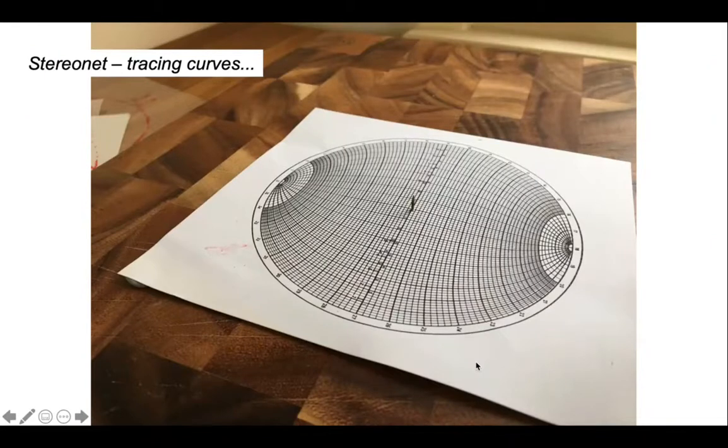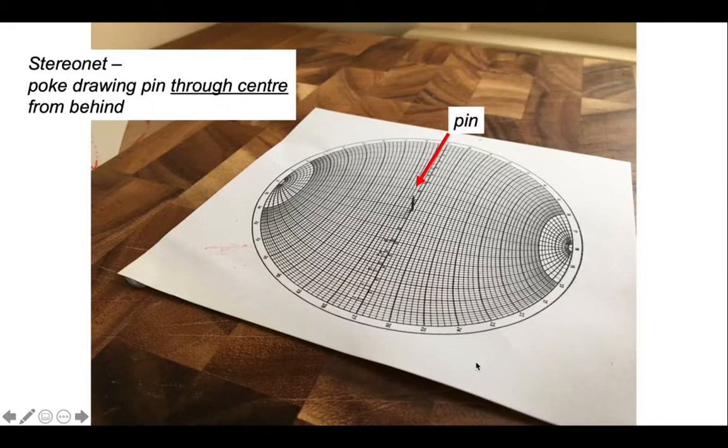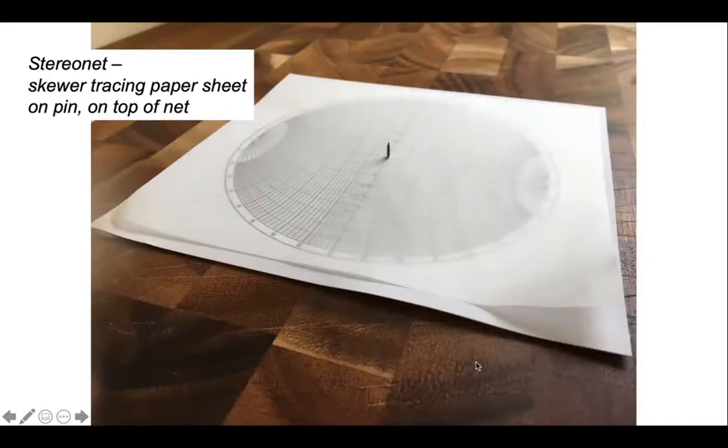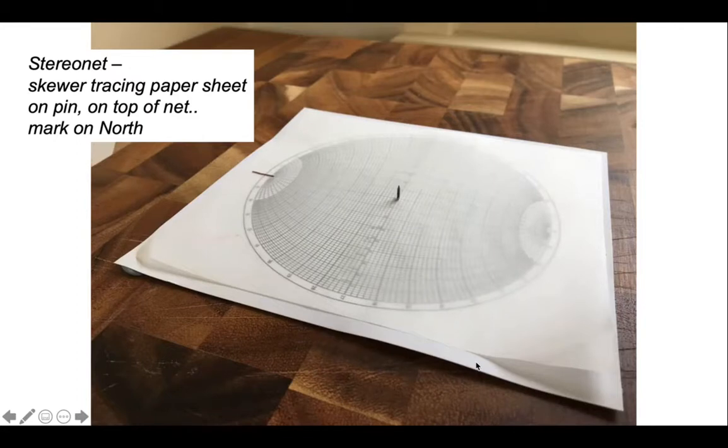So this is a stereonet, it's a set of curves we'll use for tracing, and embedded through it is a drawing pin. You position this in from underneath, though you may wish to make the hole first from the front side so you know what you're aiming for. And then impaled on this pin we stick a piece of tracing paper so that we can see through to the net below. It's on this tracing paper that we'll carry out our analysis. Because we're dealing with the orientation of things, we need to mark a north which we can align up onto the top of the curves.